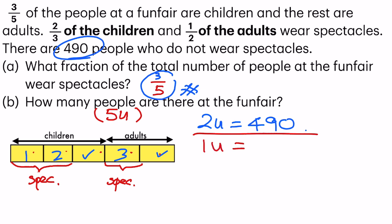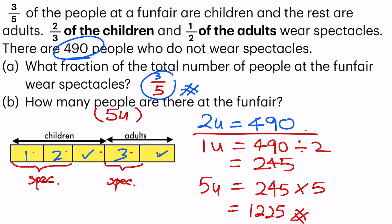So let's find 1 unit. 1 unit would be 490 divided by 2, which I will get 245. And the last step to find the total number of people at the funfair, I just have to find 5 units. So 245 multiplied by 5. And my answer will be 1,225 people. And that's it.